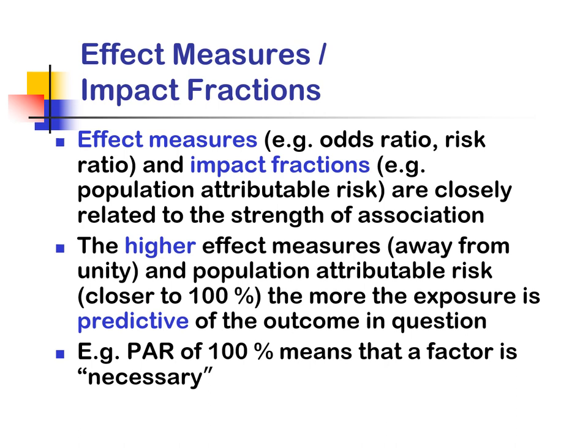Effect measures and impact fractions are closely related to the strength of association. The higher the effect measures and population attributable risk, the more the exposure is predictive of the outcome in question.